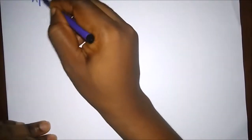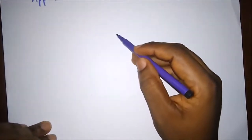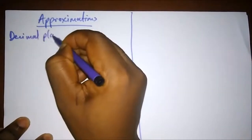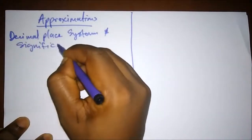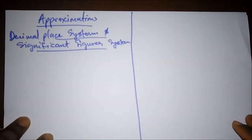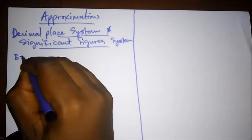Hello viewers, welcome to Destined to Win Tutorials. Today we're going to be treating approximation. Approximations are used for reducing numbers into values that can be easily handled. We have different systems of approximation — today we're going to be looking at the significant figure system and the decimal place system. We'll take some examples to further understand these two approximation systems.